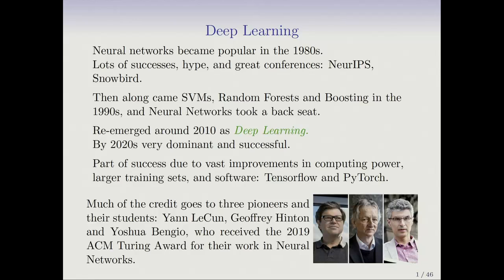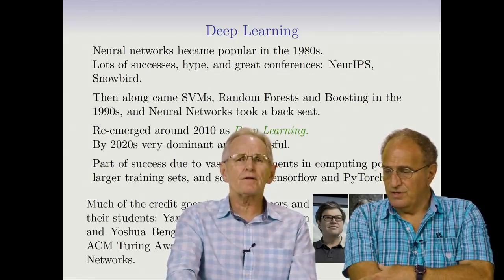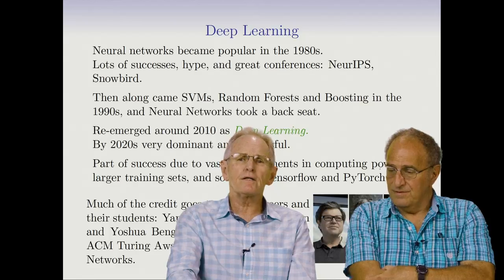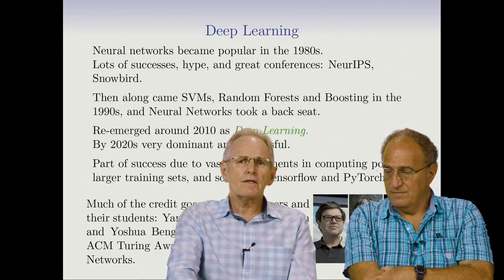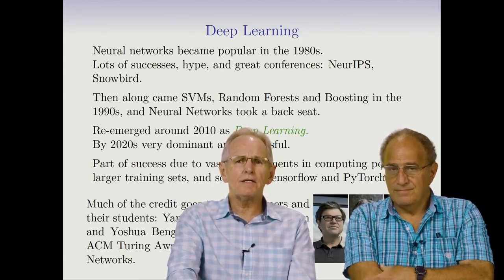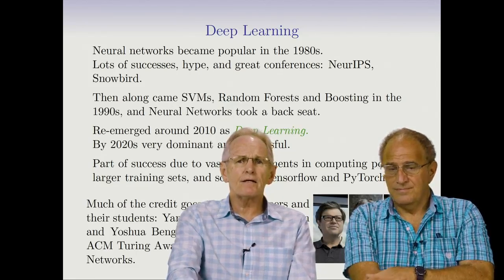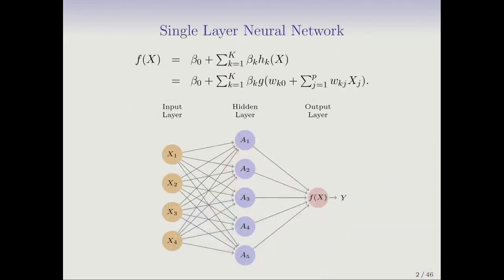But much of the credit goes to three pioneers and their students: Jan LeCun, Geoffrey Hinton, and Yoshua Bengio, who received the 2019 ACM Turing Award for their work in neural networks. On the website for the course, Trevor and I have an interview with Jeff Hinton talking about the history of neural networks and their development since the 1980s. We've known these three gentlemen pretty much for their whole careers. Jan LeCun was at Bell Labs in the 1980s and 1990s, and I was there at the same time. Yoshua Bengio was a frequent visitor. Rob worked with Jeff Hinton at University of Toronto.